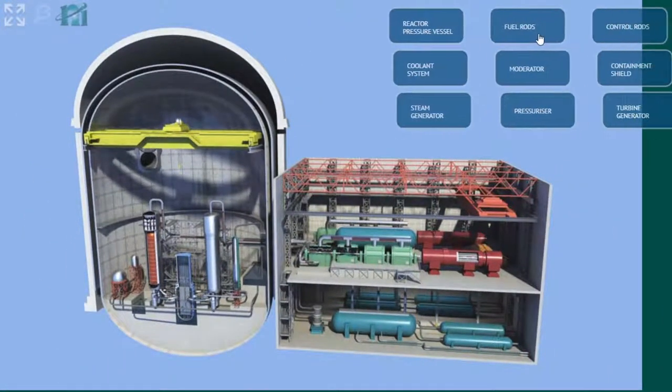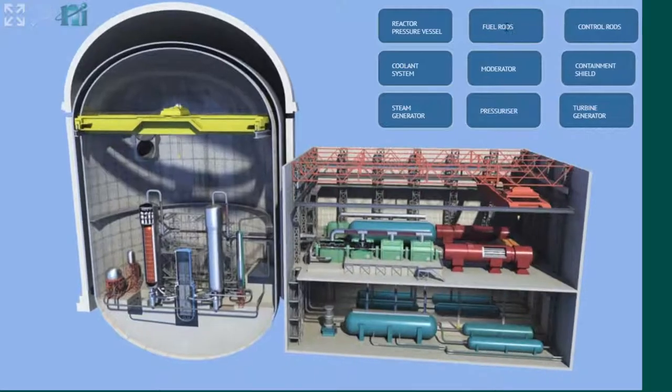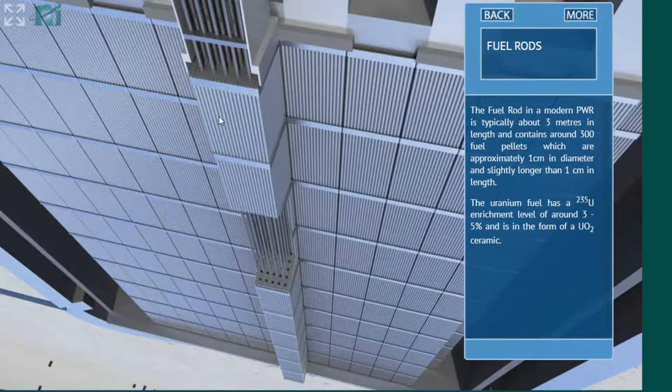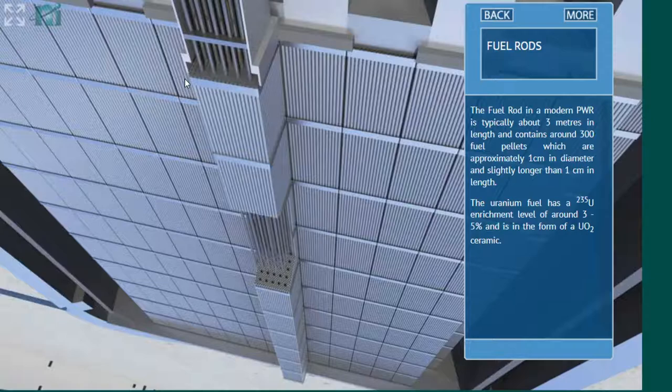Next one is the fuel rods. Here we see the fuel assemblies, which are square, prismatic, in contrast with the VVER Russian design, which are hexagonal.